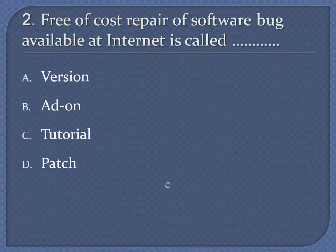Question 2: Free-of-cost repair of software bug available at Internet is called. A. Version. B. Addon. C. Tutorial. D. Patch. Answer: Patch.